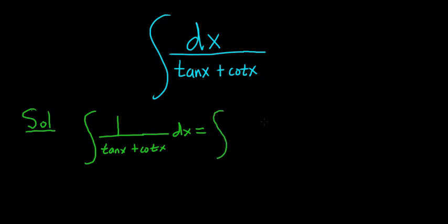So this is equal to the integral of, so it's 1 over, and so tangent is sine over cosine. So sine x over cosine x. And then cotangent is cosine x over sine x. And then here we have the dx. I'm going to put the dx over here because we're going to need the room here for the next step.